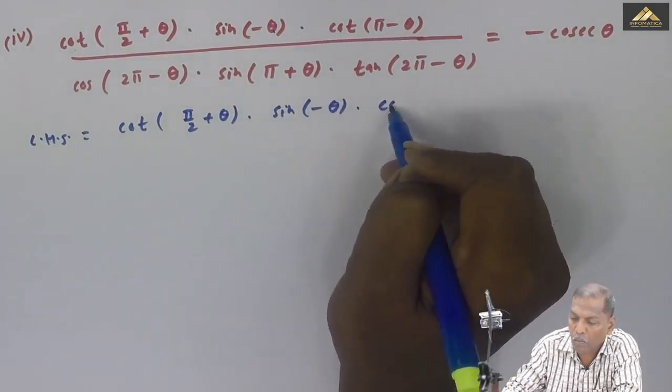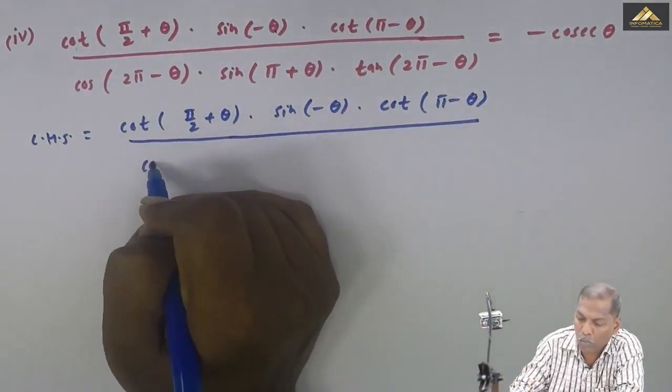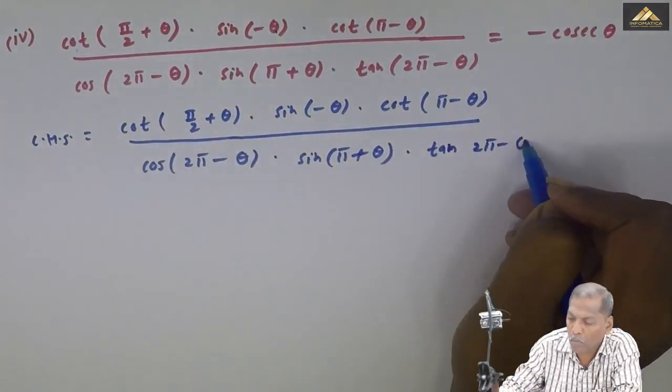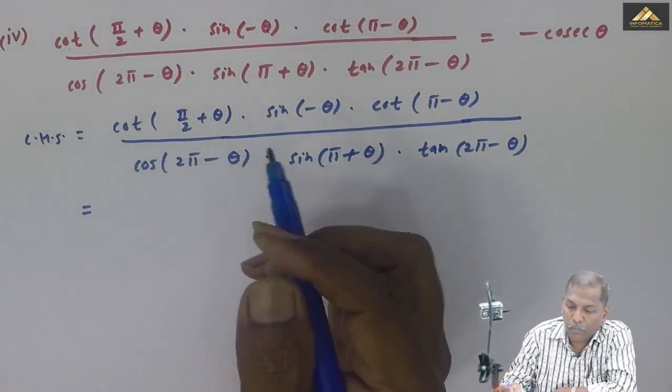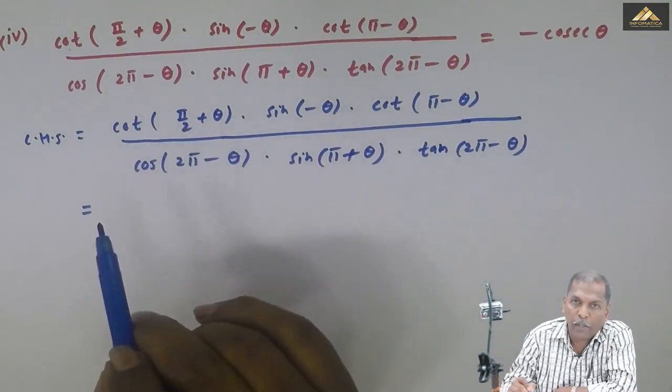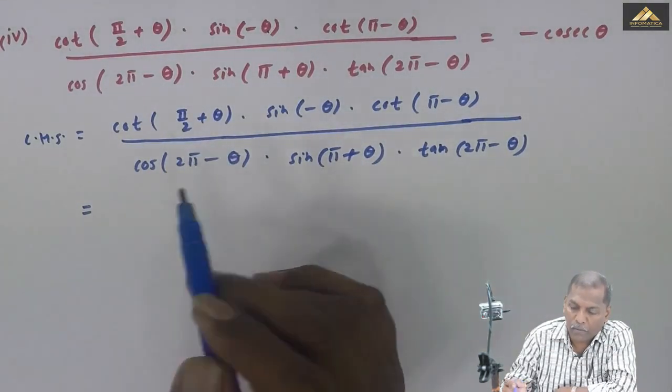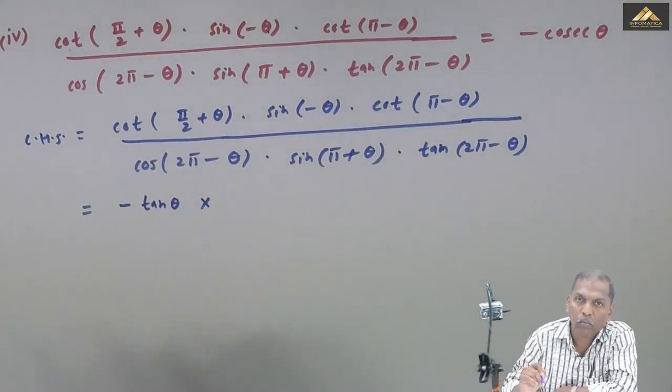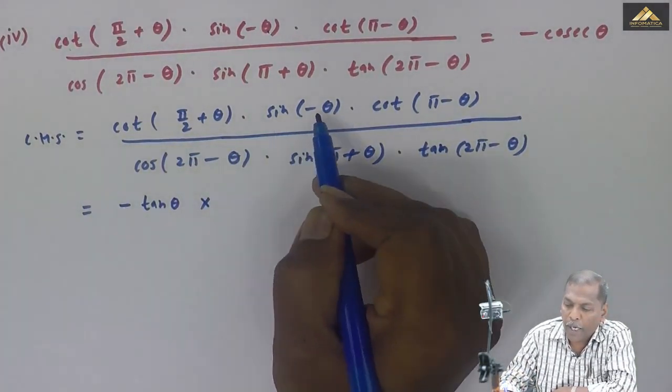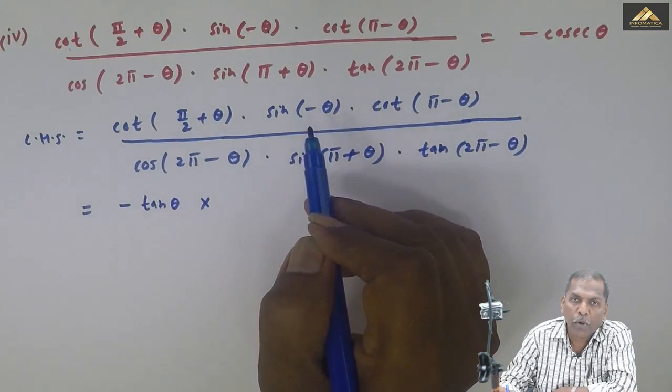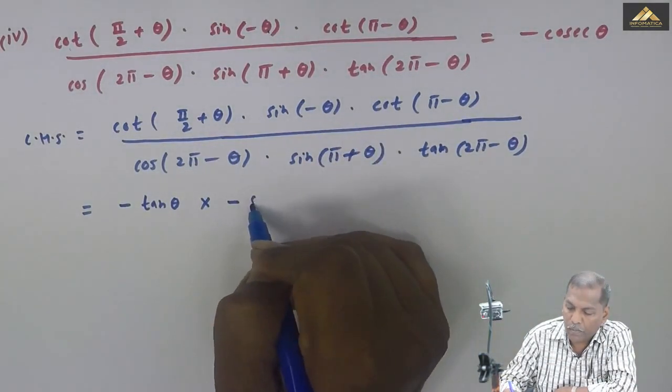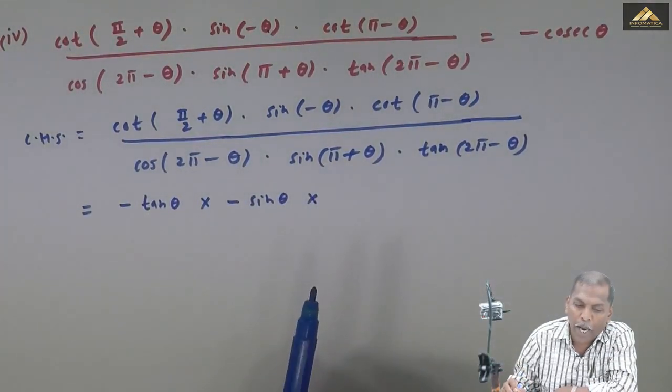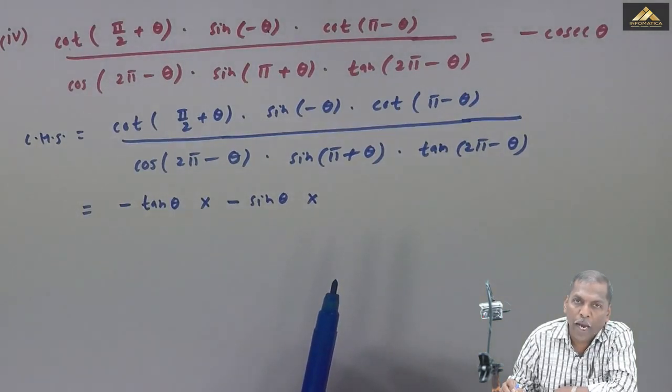So LHS is equal to: cot bracket pi by 2 plus theta is equal to minus tan theta, into sin bracket minus theta gives you minus sin theta, into cot bracket pi minus theta is equal to minus cot theta.